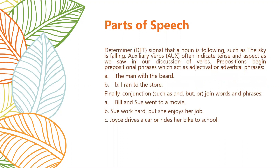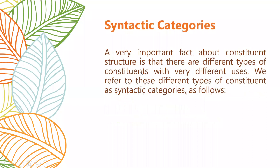A determiner signals that a noun is following — for example, 'the sky is falling,' where 'the' is the determiner article. Auxiliary verbs include: am, is, was, were. Prepositions and other word classes can also be found in examples like 'the man with the beard,' where 'the' is the determiner, 'man' is the noun, 'with' is the preposition, and 'beard' is the noun.